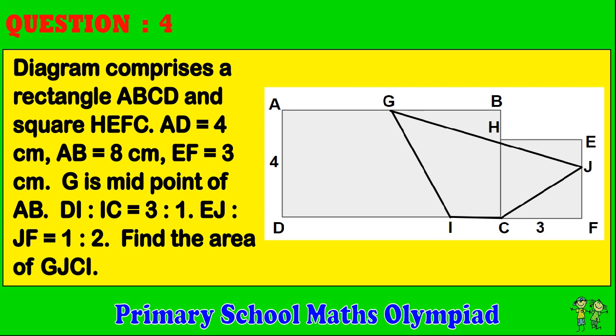The diagram comprises a rectangle ABCD and square HEFC. AD equals 4 cm, AB equals 8 cm, EF equals 3 cm. G is the midpoint of AB. DI to IC ratio is 3 to 1. EJ to JF ratio is 1 to 2. Find the area of GJCI.